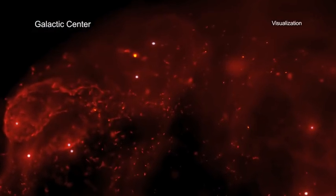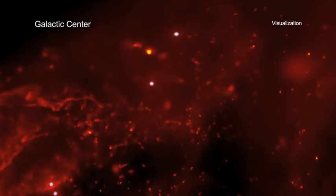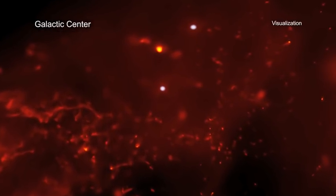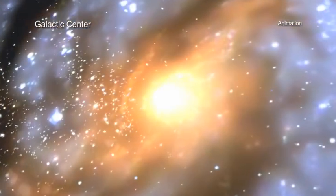Extensive observations with Chandra of the central regions of the Milky Way have provided critical data about the temperature and distribution of this multi-million degree gas. Astronomers are interested in better understanding what role these Wolf-Rayet stars play in the cosmic neighborhood at the Milky Way's center.